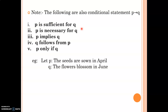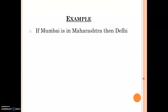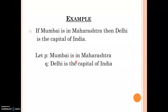Here one example is given. Let P be 'the seeds are sown in April' and Q be 'the flowers blossom in June'. Symbolically, P implies Q can be written as: 'If the seeds are sown in April, then the flowers blossom in June.' Another example: 'If Mumbai is in Maharashtra, then Delhi is the capital of India.' Here two simple statements are connected with 'if...then'. The first simple statement P is 'Mumbai is in Maharashtra' and the second statement Q is 'Delhi is the capital of India'.